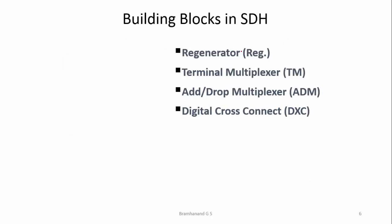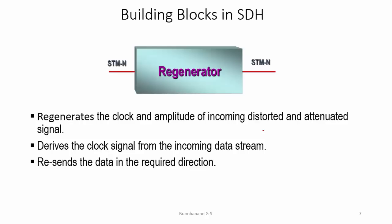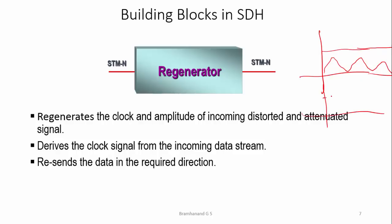The building blocks of SDH include a regenerator, terminal multiplexer, add-drop multiplexer, and digital cross connects — these are all the types of NEs supported in an SDH network. A regenerator regenerates the clock and amplitude of an incoming bit-distorted and attenuated signal. It derives the clock signal from the incoming data stream and resends the data in the required direction, reshaping and amplifying the signal.